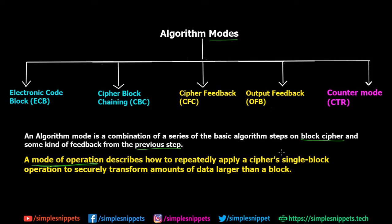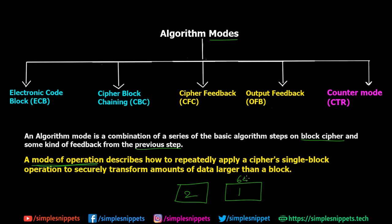Depending on whether we're using Electronic Code Block, Cipher Block Chaining, Cipher Feedback, or another mode, some set of steps will be applied to the first 64-bit block, and then some steps will be applied to the second 64-bit block. Let me draw one block here — block one and block two, each 64 bits. Depending on which of the five algorithm modes is selected, the defined steps will be applied to each block in turn.